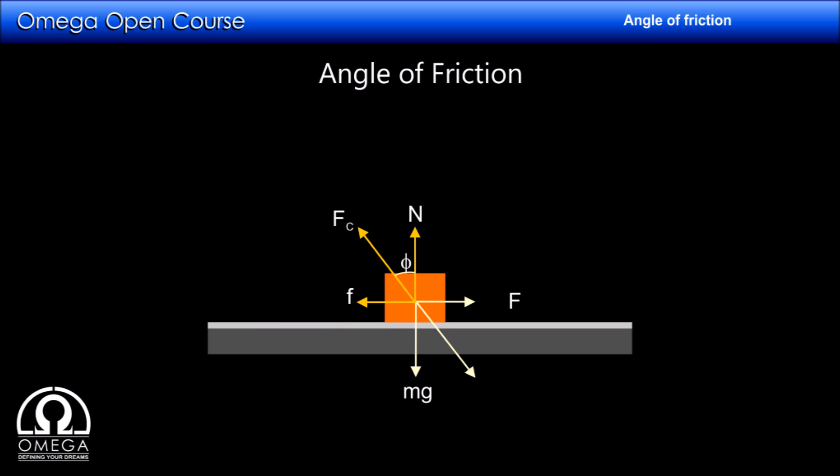Now that you have understood the basics of angle of friction, let us see how it is used in problem solving. A large number of questions on friction usually revolve around the limiting value of friction, that is when the motion is impending. As we have seen, in that case the angle of friction is tan inverse mu.